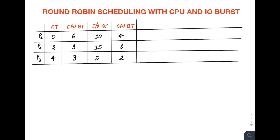In this video we are going to discuss another example of the Round Robin scheduling algorithm, but this example has both CPU burst time and I/O burst time. In the last video we only had CPU burst time. When there is I/O, the cycle is: first a CPU burst, then an I/O burst, and then another CPU burst. Once a process completes its I/O burst it will again enter the ready queue.